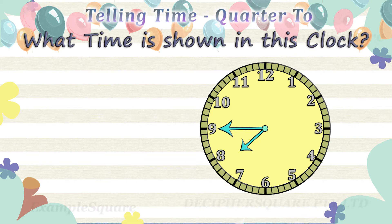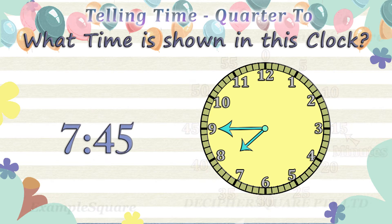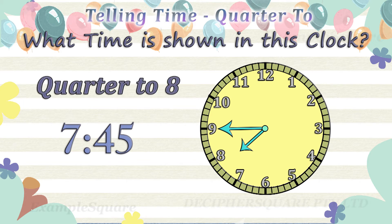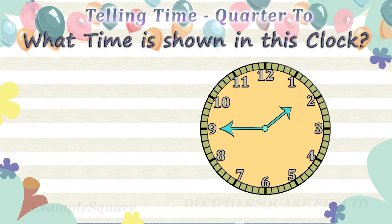What time is shown in this clock? The hour hand is pointing in between 7 and 8, so the time is 7 hours and some minutes. The minute hand is pointing at 9, referring to 45 minutes. The time is 7:45. It is 15 minutes to 8. 15 minutes is quarter of an hour, so the time is quarter to 8.